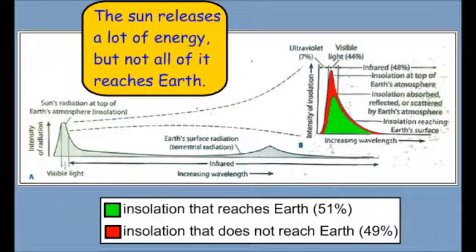Now, of that short-wave radiation, this diagram here breaks down how much of it actually reaches the Earth, because the sun releases a lot of energy, but not all of it reaches the Earth. The green portion is the insolation that reaches the Earth, and that's about 51%. The red portion is the insolation that never reaches the Earth, and that's about 49%. So only about a little more than half of the sun's energy actually reaches the Earth.